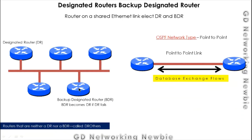The job of the Backup Designated Router is to become the Designated Router as soon as the current Designated Router fails. So we have one router acting as the DR, but if it fails, the BDR takes its place and performs all the functions that the DR was responsible for.